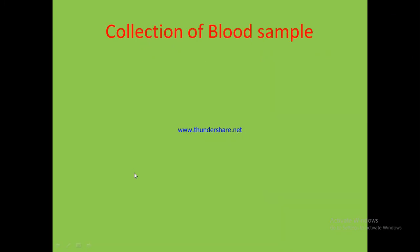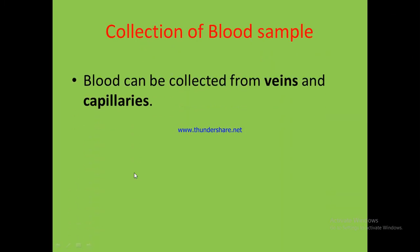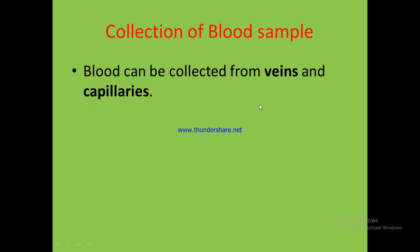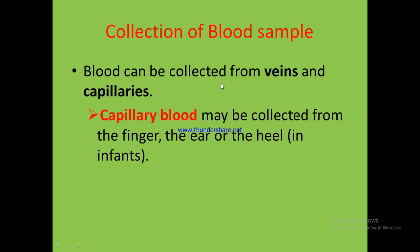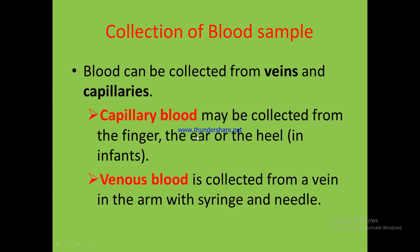Regarding collection of blood: blood can be collected from veins and capillaries, depending on the required blood volume. Capillary blood may be collected from the finger, the earlobe, or the heel in infants. Venous blood is collected from the vein using a syringe and needle.